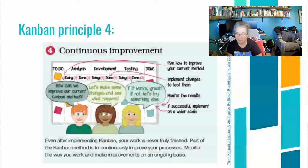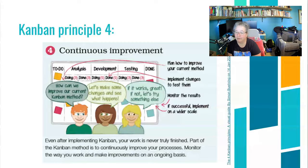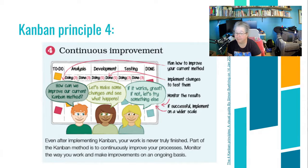Which brings us to Kanban principle number four. The idea is that we're going to continuously improve and continuously monitor our own progress and our process of work. That way, it's agile enough to be responsive to changes in the context of the workplace, changes to the project itself, or changes to the timeline. So that agility is something that makes a tool like Trello very appealing to people in agile worlds of project management, like software development.